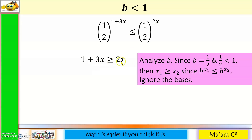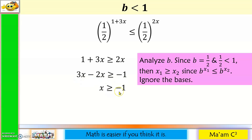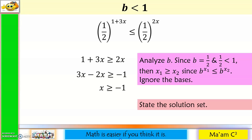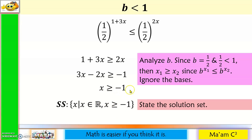Then let's solve for x. Let us move 2x together with 3x, and 1 to the other side. 3x minus 2x is x, so x is greater than or equal to negative 1. The solution set is the set of all x such that x is a real number where x is greater than or equal to negative 1. In interval notation, that is from negative 1 to positive infinity, with a bracket because there is 'or equal to.'